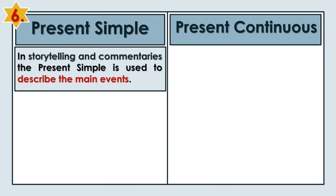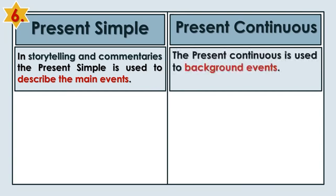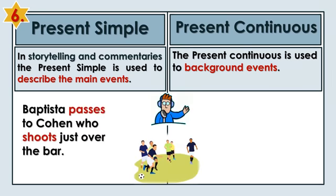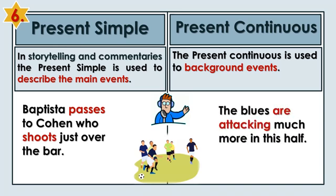In storytelling and commentaries, the Present Simple is used to describe the main events. Present Continuous is used for background events. Baptista passes to Cohen, who shoots just over the bar. The Blues are attacking much more in this half.